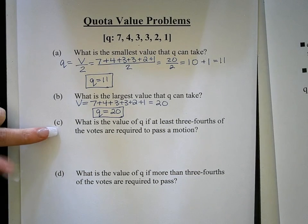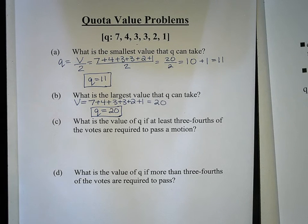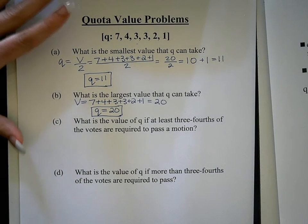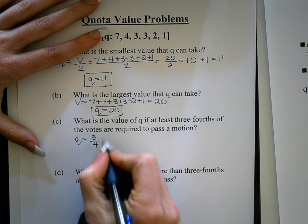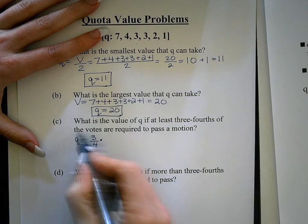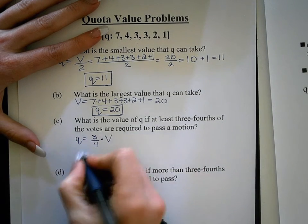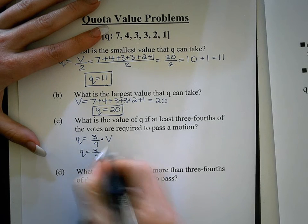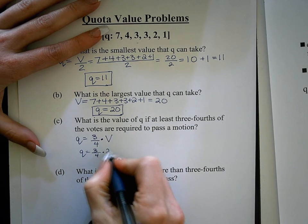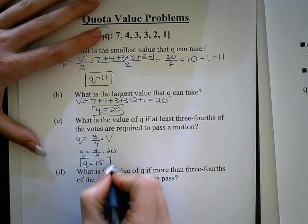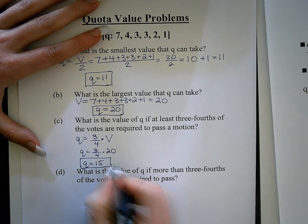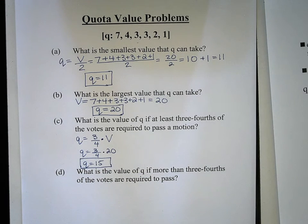This next example asks: what is the value of the quota if at least three-fourths of the votes are required to pass a motion? The quota would be three-fourths times the total votes V. Since the total number of votes is 20, three-fourths of 20 is 15. So the quota would be 15 if at least three-fourths of the votes are required.